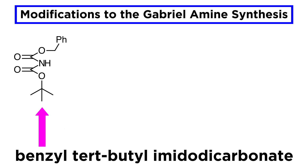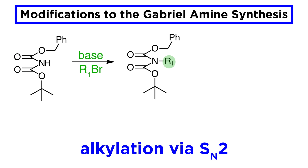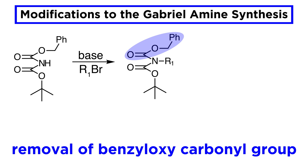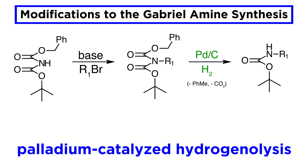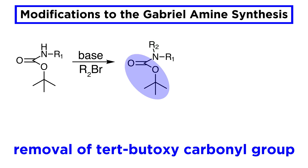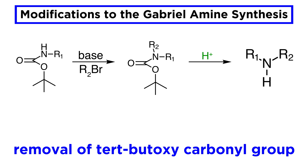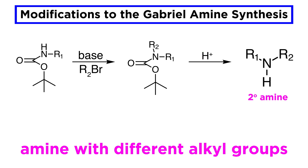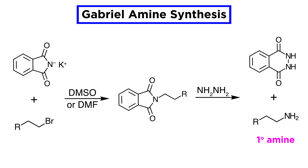Here we see an example involving the use of benzyl-tertbutyl imidodicarbonate. In the presence of strong base, this compound can be alkylated, just as in the Gabriel synthesis. Then the benzyloxycarbonyl group can be removed under mild conditions using palladium-catalyzed hydrogenolysis, which involves loss of CO2. A second alkylation can be carried out in similar fashion, and then the tertbutoxycarbonyl group can be removed under mildly acidic conditions, yielding a secondary amine with two different alkyl groups, thus considerably expanding the scope of the Gabriel synthesis. The original Gabriel primary amine synthesis remains a classic reaction with great utility in modern synthesis, and every organic chemist should be familiar with this important reaction.